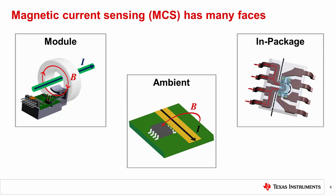There are several different implementations of magnetic current sensing, or MCS, which all use the same fundamental physics given by Ampere's Law. Since the physics is the same for all of these solutions, the difference is in the mechanical and magnetic integration of the solution — where the field is generated and measured relative to the current flow. The solution space can be roughly split into three different types, depending on that mechanical integration.